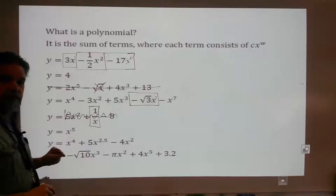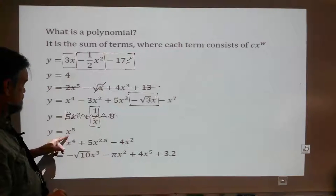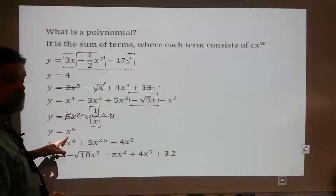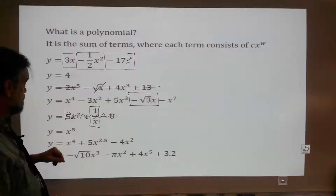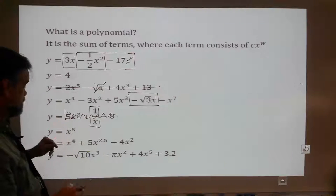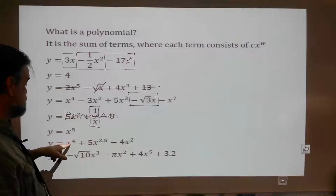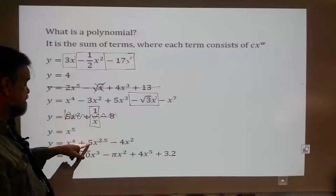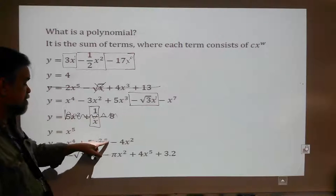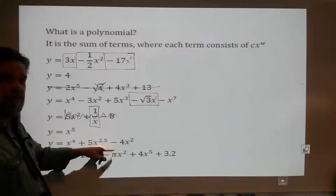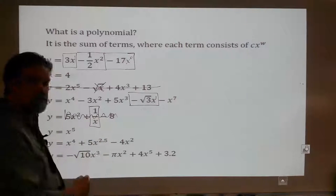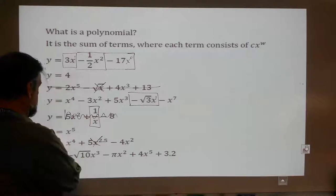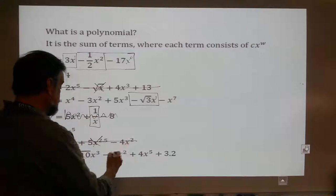x to the 5th — is that a polynomial? Yeah, it's a polynomial. It's a monomial and it's perfectly fine. What about x to the 4th plus 5 times x to the 2.5? Nope. 2.5 is not a whole number. This is not a polynomial.